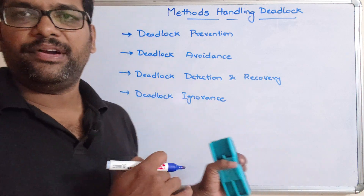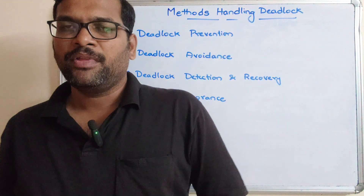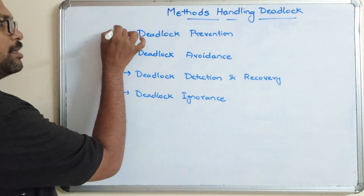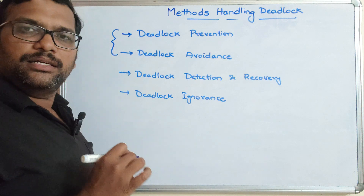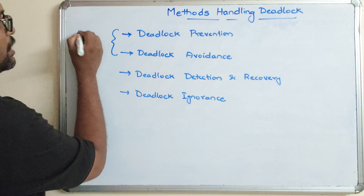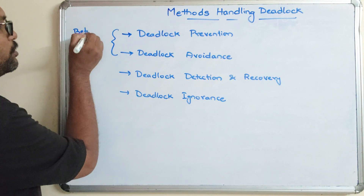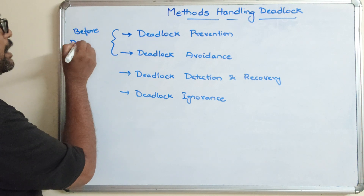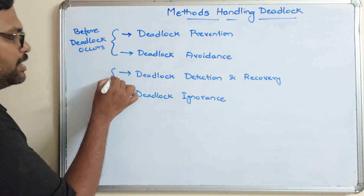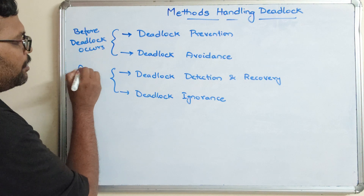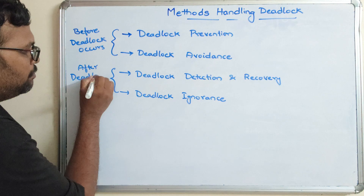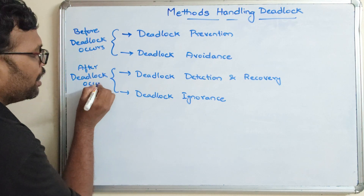In this session I'll give a brief introduction about all of these methods, and in further sessions we'll go in depth. The first two methods — deadlock prevention and deadlock avoidance — can be applied before a deadlock occurs, while deadlock detection and recovery and deadlock ignorance are methods applied after the deadlock occurs.